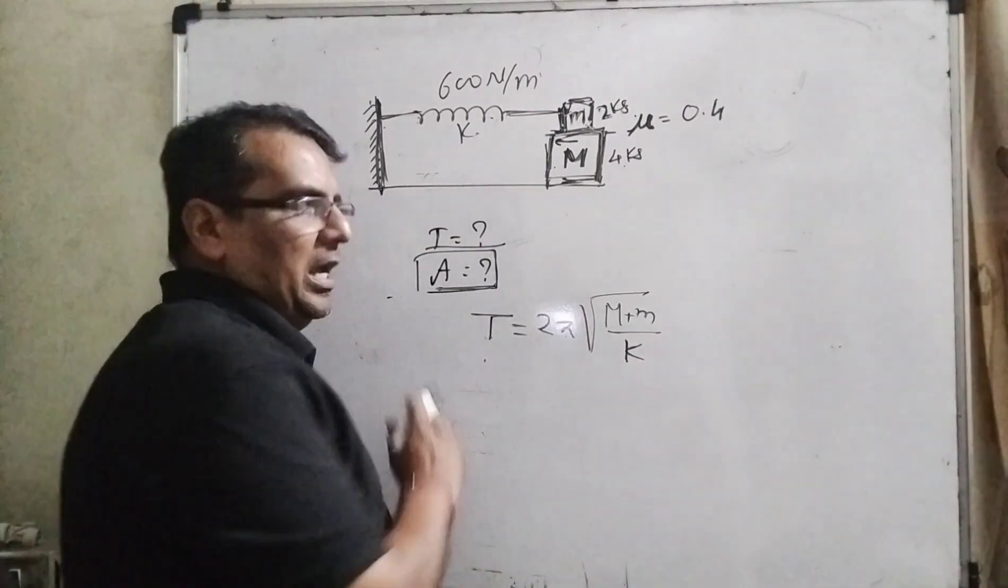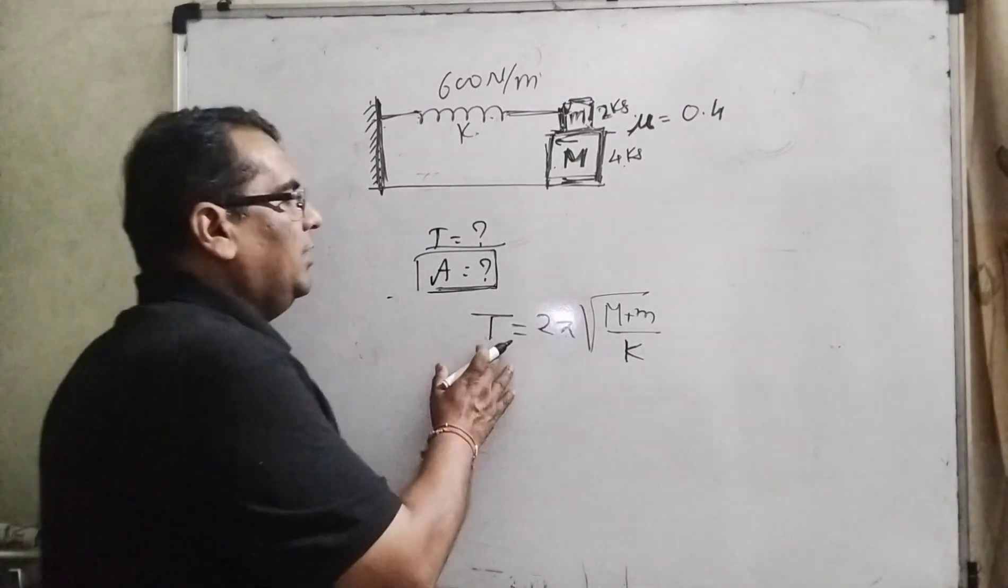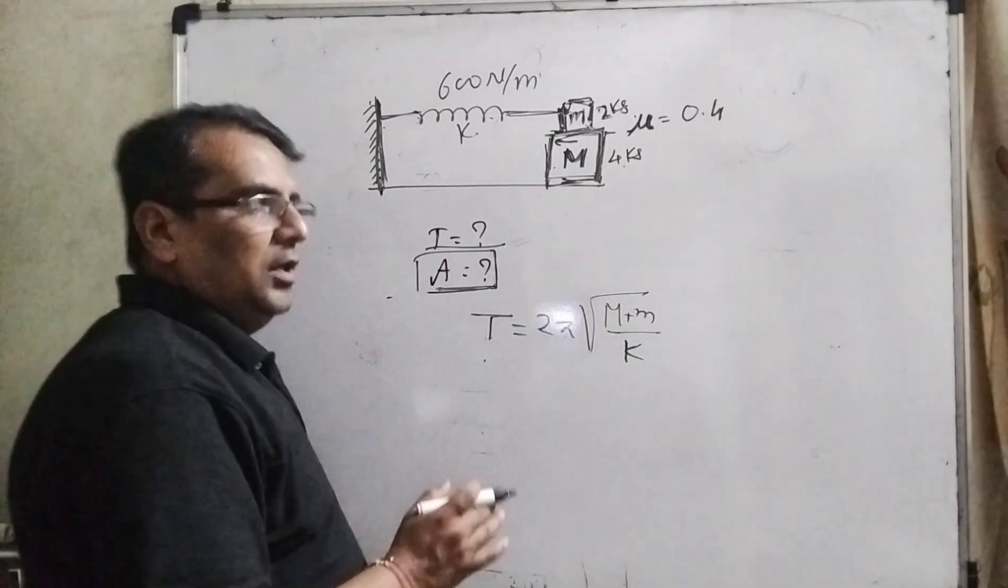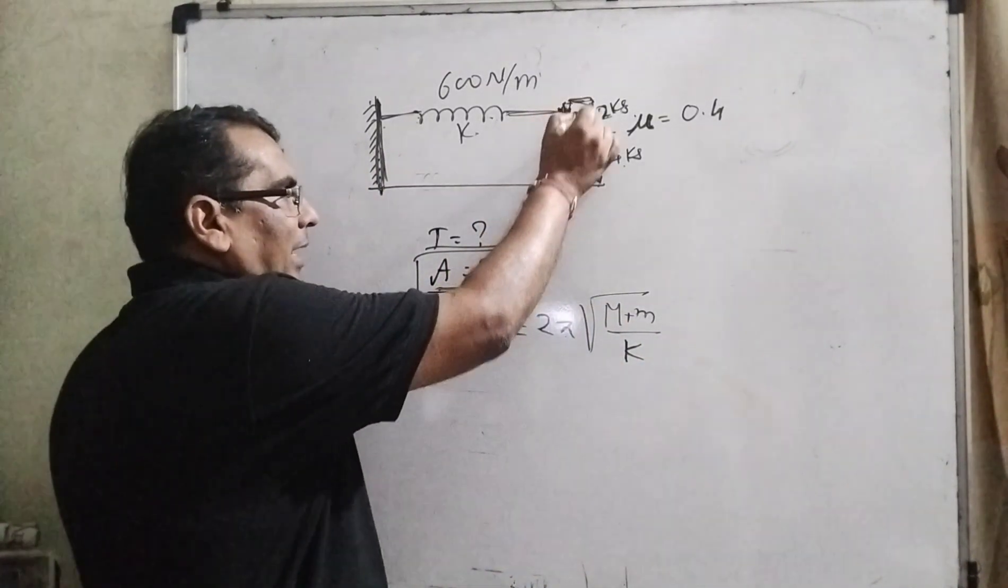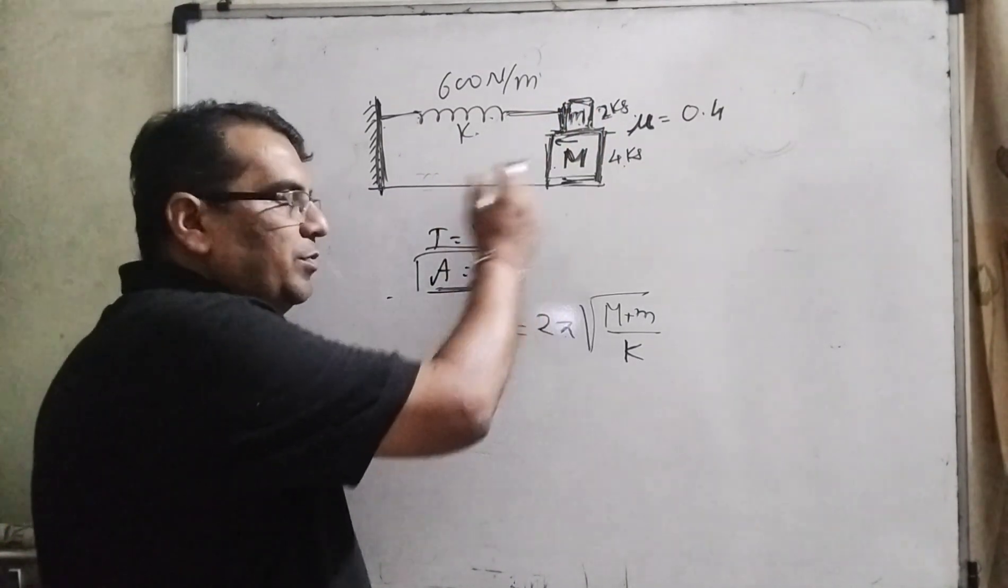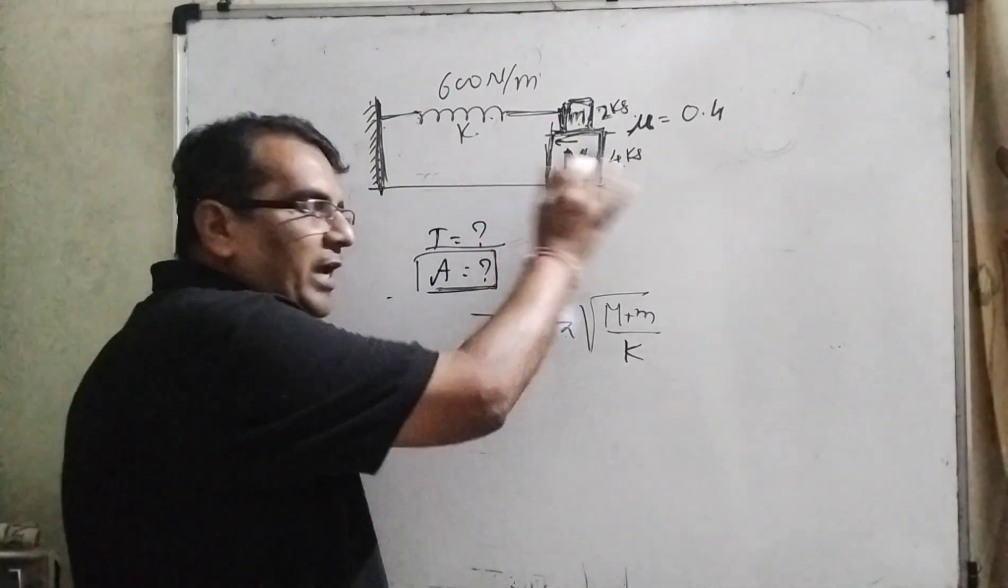Here we have to find out the time period. T equal to 2π√(m/k). Here m is effective mass. You know that the small block is placed over the bigger block and it seems to be oscillating, meaning they are moving together.